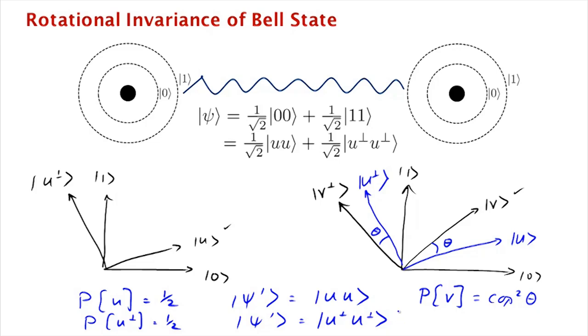So in this case, the probability that we see v perp as the answer to our measurement would have been, again, cosine squared theta.